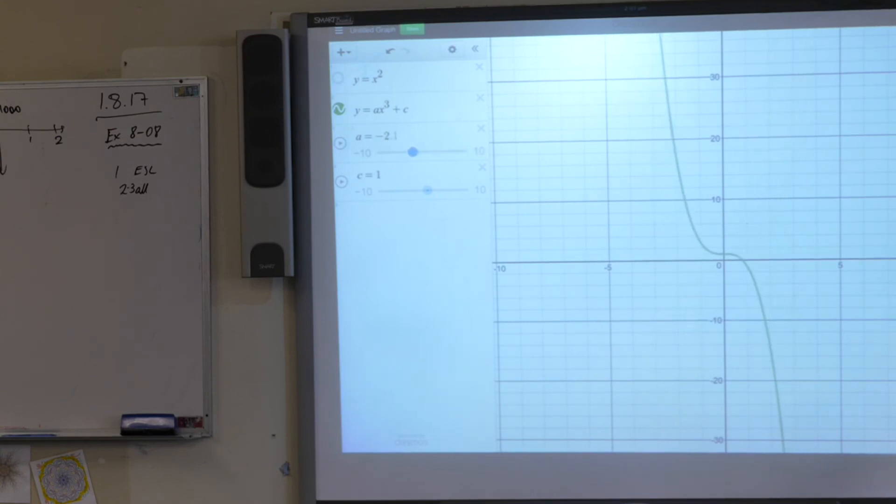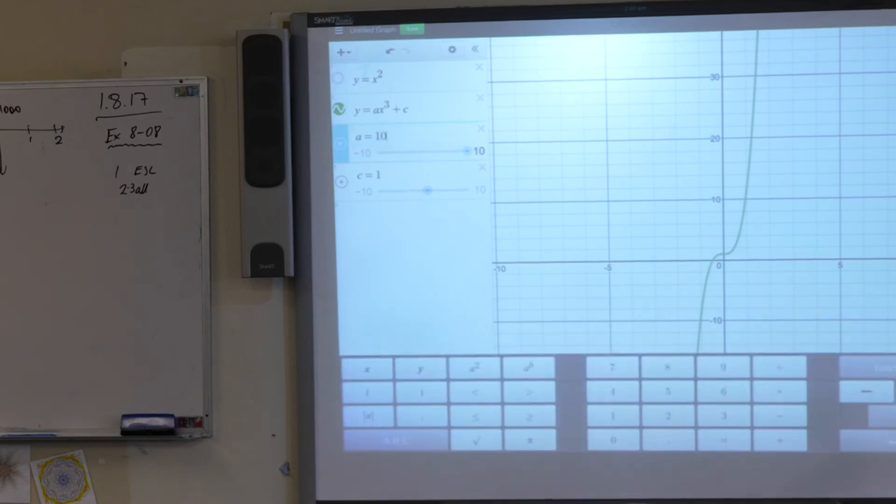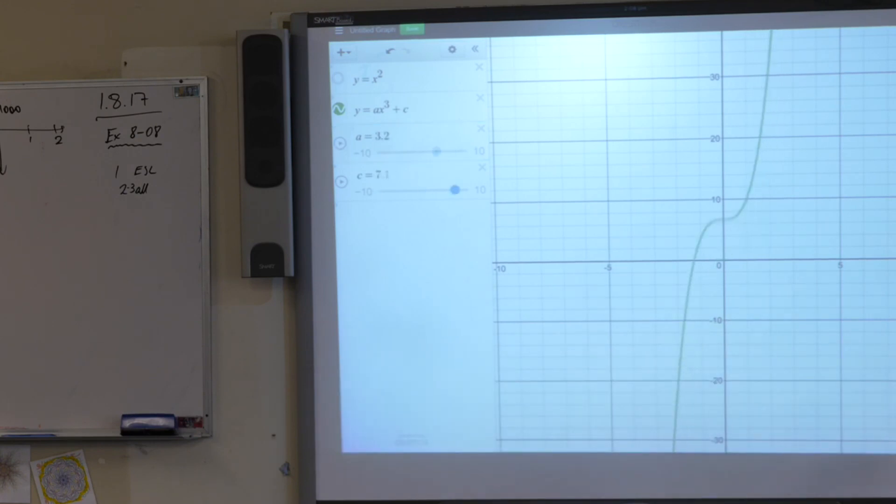What happened to the parabola when we put a negative number out the front like this? It goes upside down, right? Well, look at this. Look carefully. Isn't this an upside down version of this? It is. It's the same transformation. You've transformed it in the same way. What do you predict will happen when I change C? Well, just like with the parabola, when you change C, then look, it just slides up and down, just like it did for the parabola.